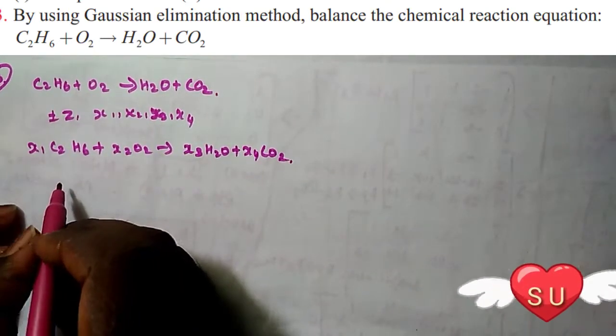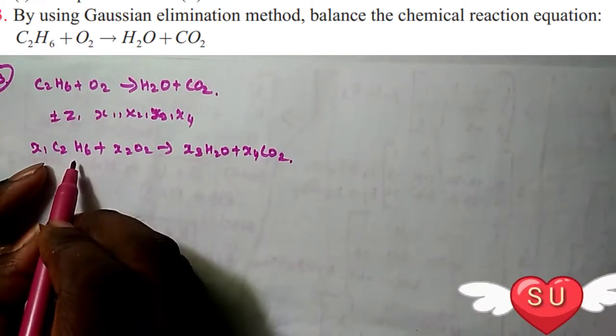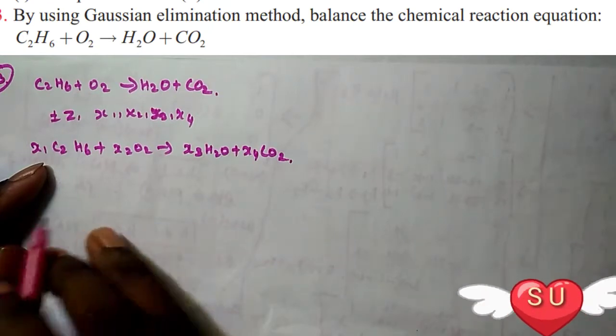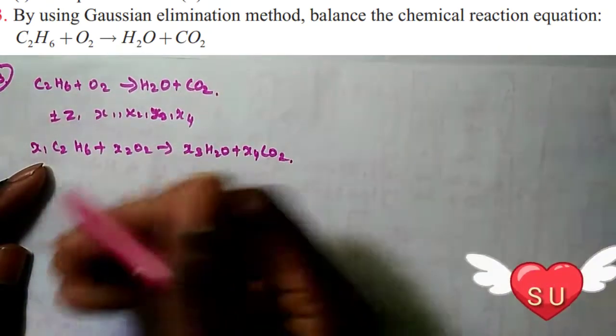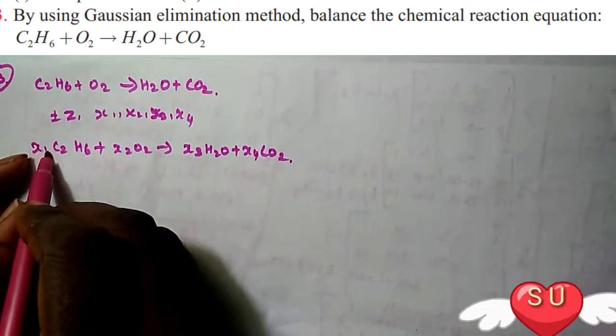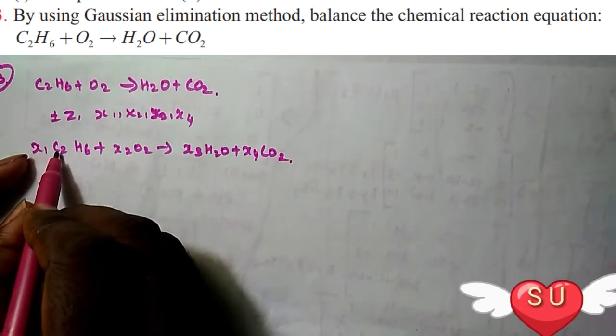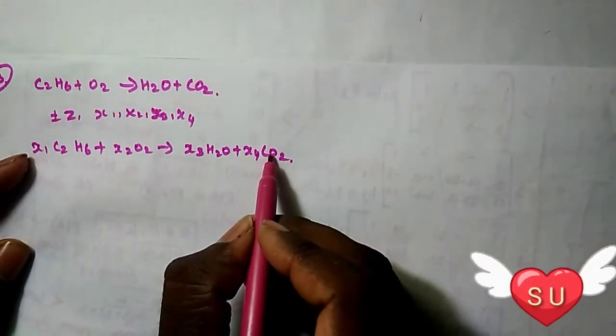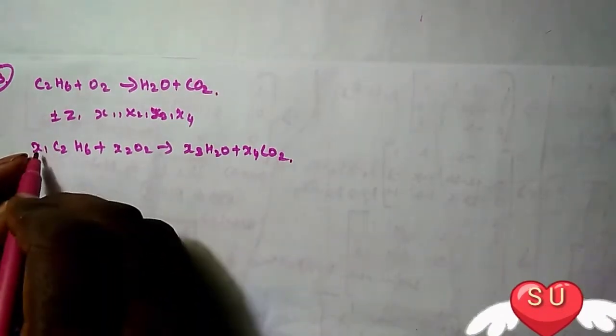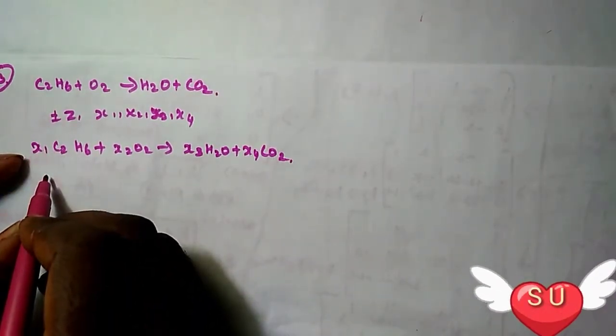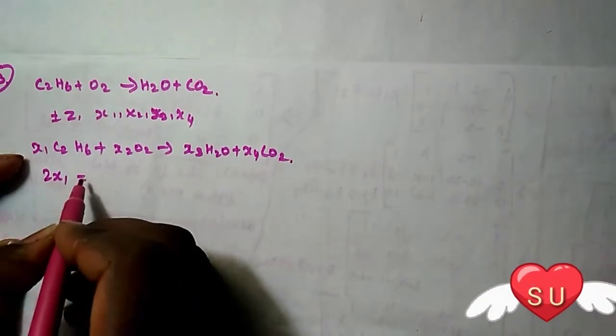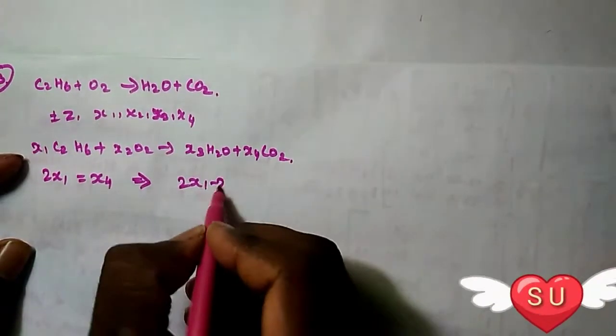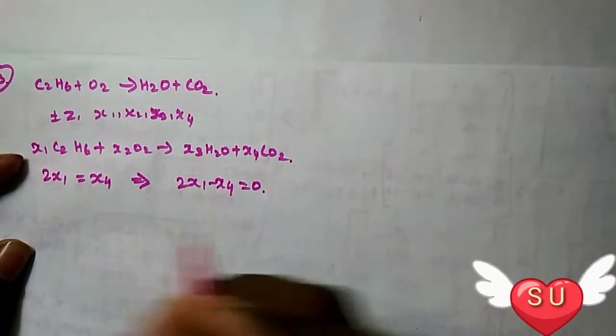We need to balance carbon, hydrogen, and oxygen atoms. For carbon: x1 C2 equals x4 C, so 2x1 equals x4.